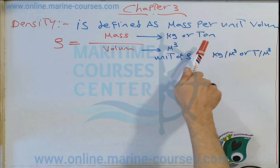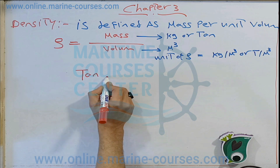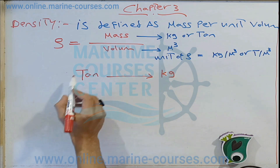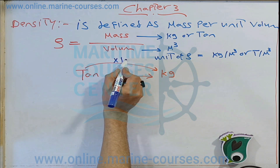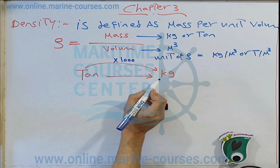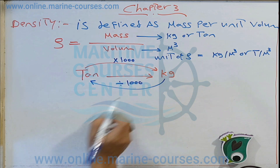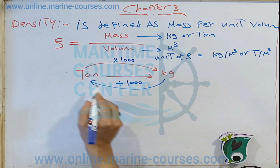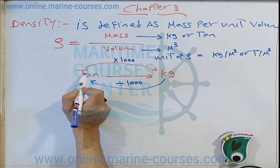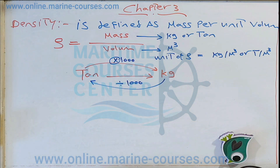Now we want to know something important: how to change from kilogram to ton and vice versa. If we want to change from ton to kilogram, we multiply by 1000. And from kilogram to ton, we divide by 1000. You have to know that ton is bigger than kilogram — the bigger unit always multiplies to give the smaller unit.